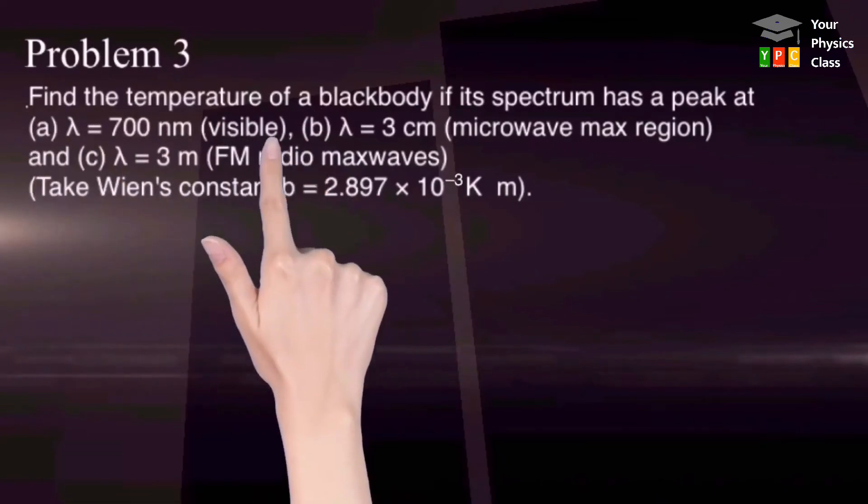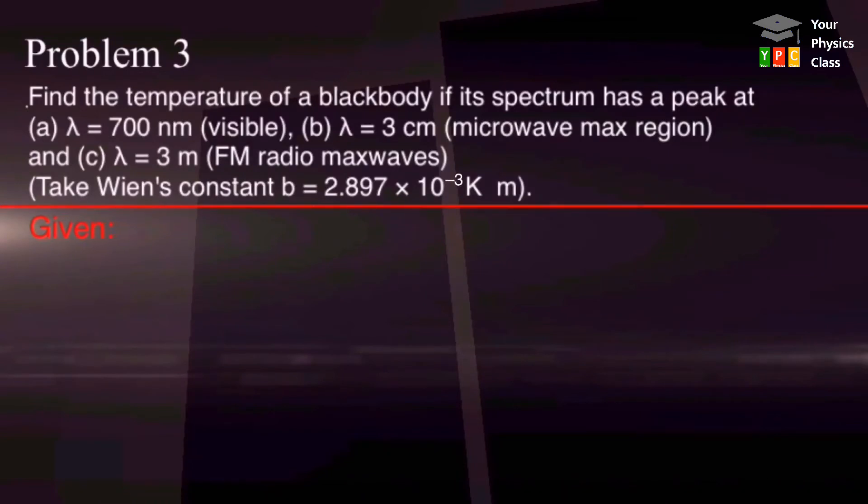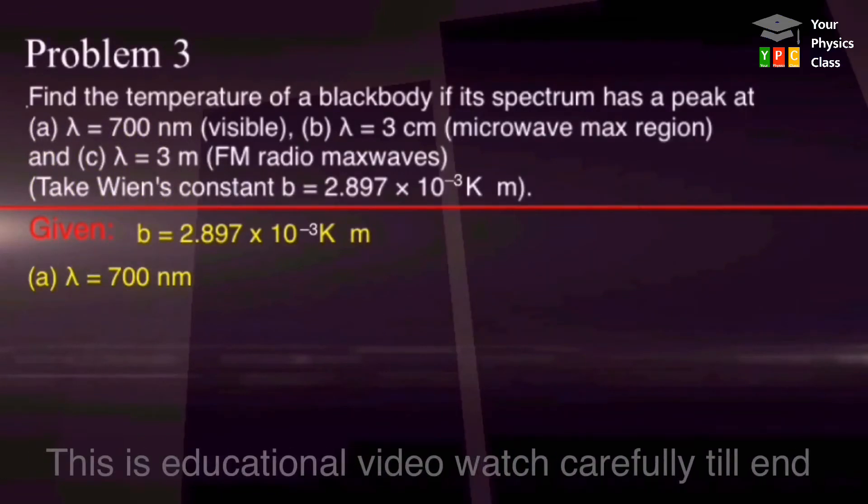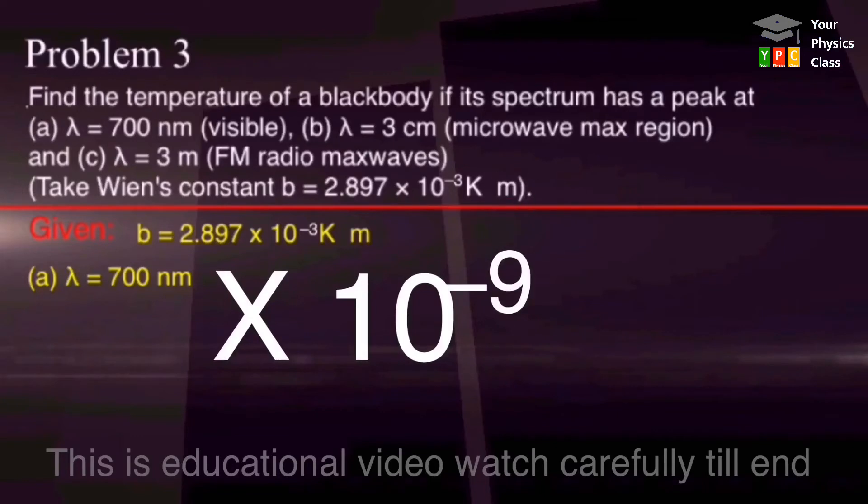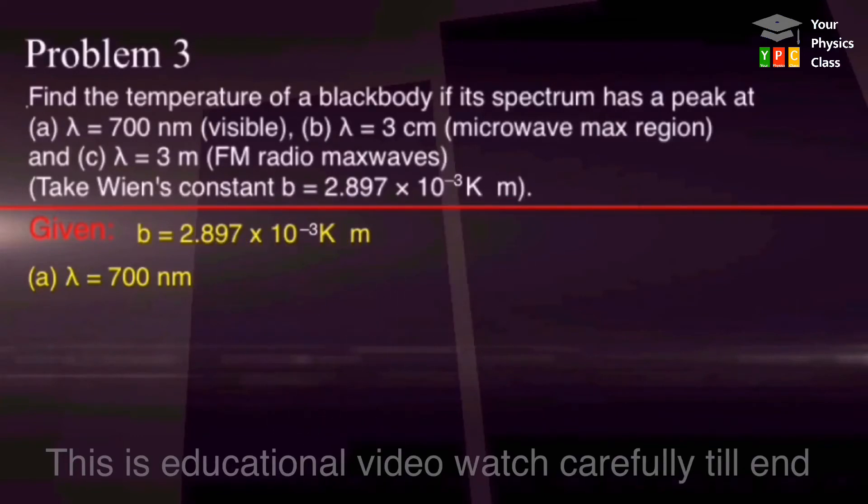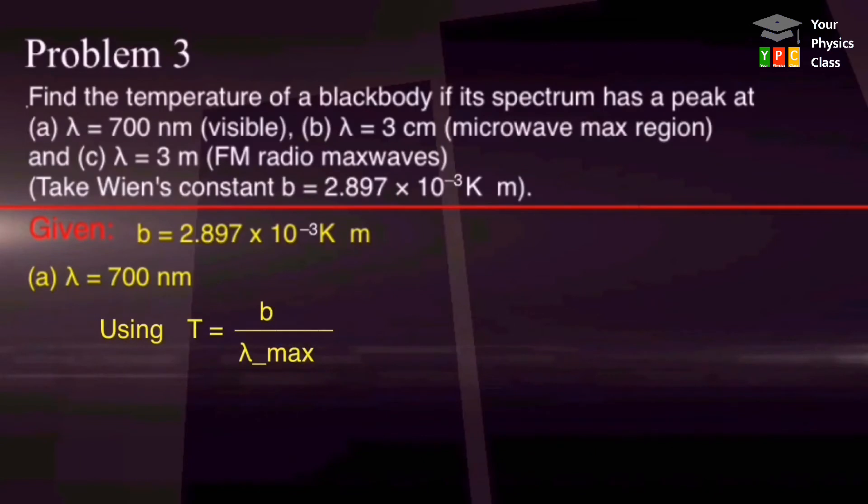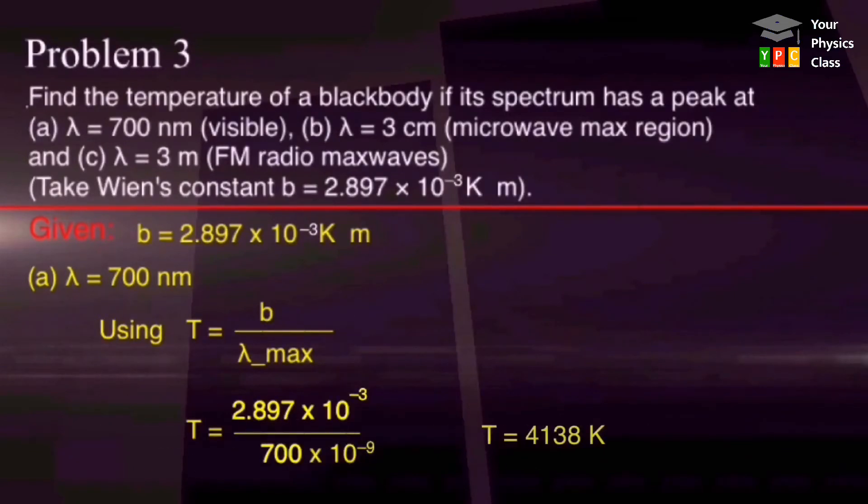This problem consists of three parts. We will solve one by one. Here, Wien's constant is given and the first wavelength is lambda equals 700 nanometer. Your first attempt is to convert nanometer into meter. Multiply this number by 10 raised to minus 9. It will be in meter. Using Wien's displacement law in this format and now substituting values and solving this equation, we get 4138 Kelvin as the answer.